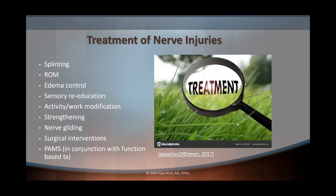Now let's talk about treatment of nerve injuries. We can do splinting, range of motion, edema control, sensory re-education, or sensory desensitization, activity and work modification, strengthening, nerve gliding, surgical interventions, and physical agent modalities. With sensory re-education, we have to assess that our patient has at least a protective level of sensation first. Sensory desensitization can be performed if after surgical intervention a person reports feeling very hypersensitive in their scar area. Using physical agent modalities may differ among states, so check if you need a specialty certification.